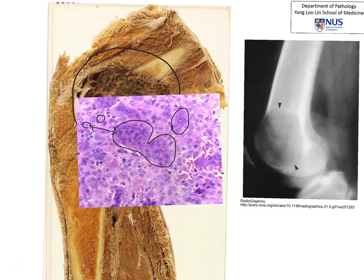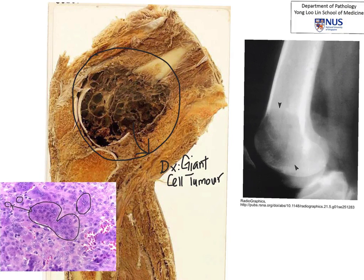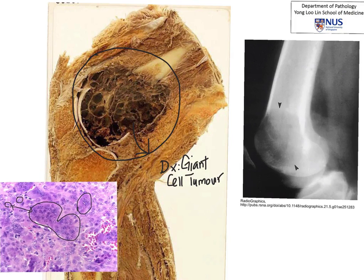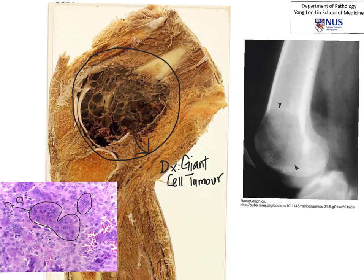Therefore, the combination of the clinical picture, the patient's age, the location of the lesion, the radiological appearance, as well as the histologic appearance will help to clinch the diagnosis. Clinically, the patient may present with pain as well as sometimes even pathological fracture because, as you can see, the bony structure is quite replaced by the tumour. The clinician would then proceed to do the necessary radiologic tests in order to clinch the diagnosis. Thank you.